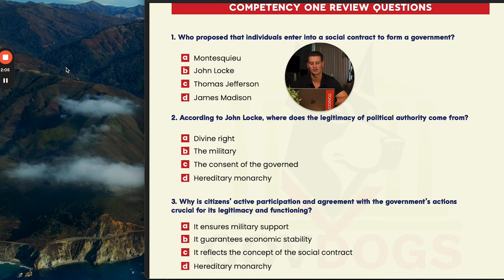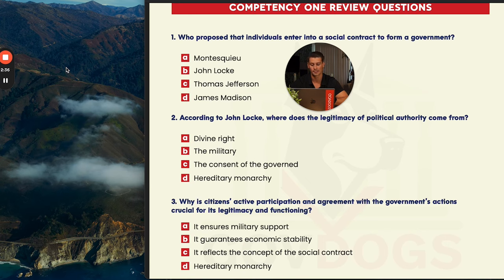Number three: why is citizens' active participation and agreement with the government's actions crucial for its legitimacy and functioning? A says to ensure military support, B guarantees economic stability, C reflects the concept of the social contract, and D is hereditary monarchy. Nothing really about the military here, and hereditary monarchy has nothing to do with this question. Citizens' active participation and agreement with government actions is quintessentially the idea of the social contract — people give up some rights to the government in order for the government to protect them. The answer here is C.